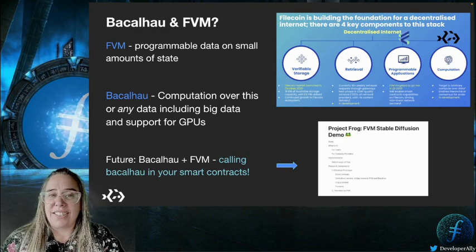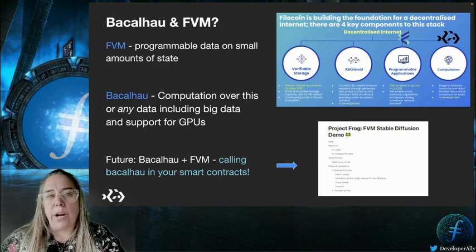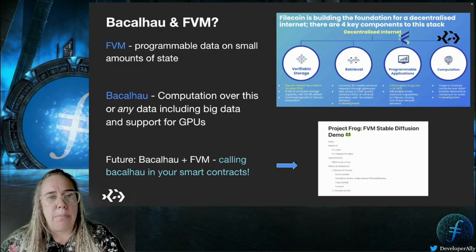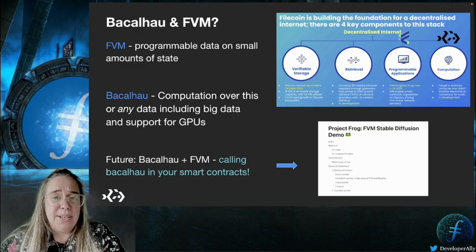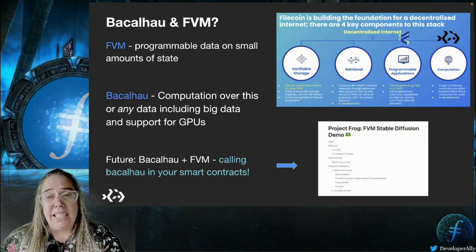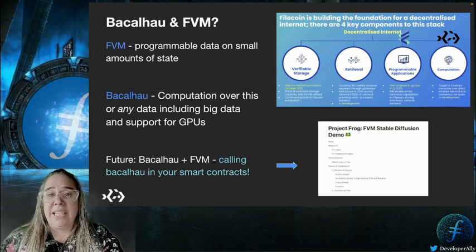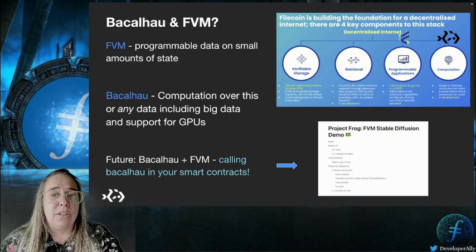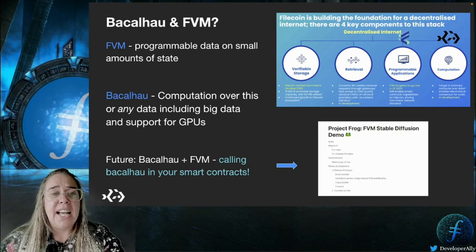For those following the Filecoin roadmap, Bacalhau will go hand in hand with the Filecoin Virtual Machine, which is Filecoin's EVM-compatible layer one. While FVM can offer programmable data on small amounts of state, Bacalhau provides compute over that data — or any data, not just on Filecoin — including big data with GPU support. In the not too distant future, you should even be able to call Bacalhau in your smart contracts. Keep an eye on Project Frog, a POC the team is working on now.